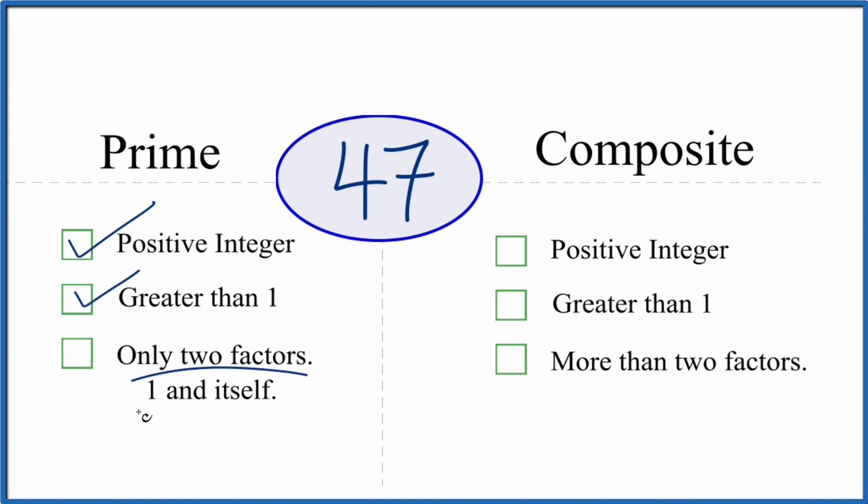And are there only two factors, 1 and 47, that go evenly into 47? So we know that 1 times 47, that's 47. So there's 1, 2 factors. But are there any more?